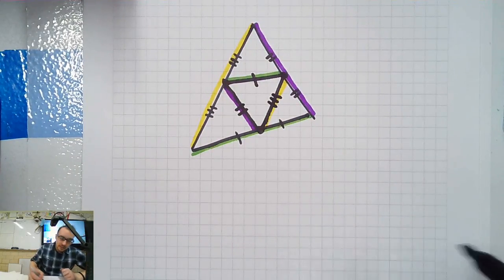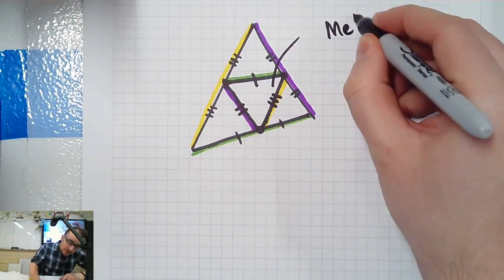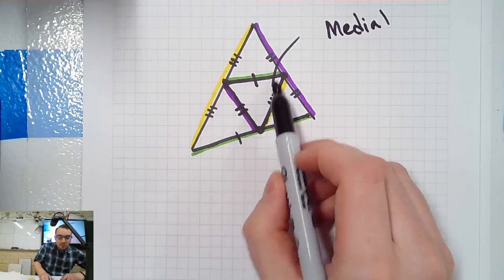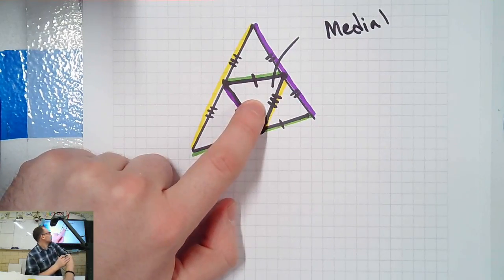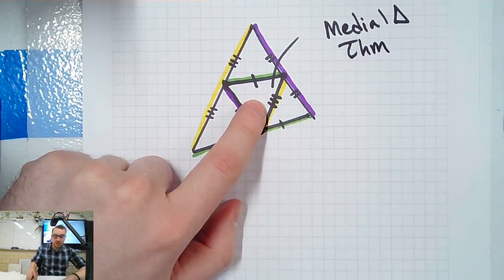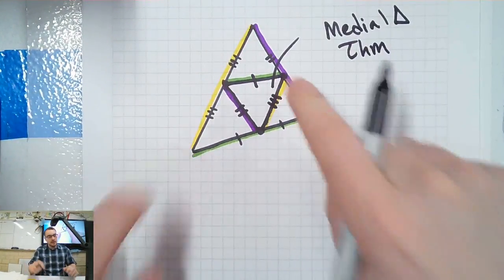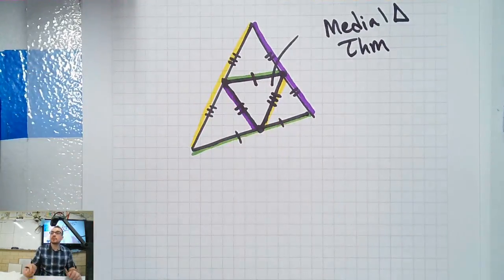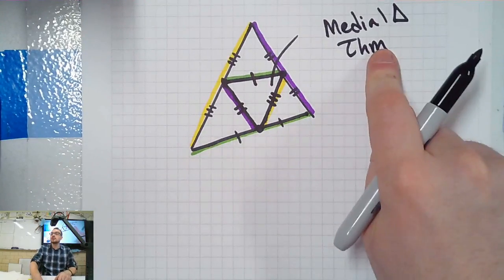So all of that was a theorem — we just never called it anything. It's called the Medial Triangle Theorem. The reason is that when you connect the midpoints of a triangle — making the midsegments — you create a triangle in the middle called the medial triangle. The Medial Triangle Theorem says that these sides will be parallel, and the opposite sides will be half and double. So it just gets you all this for free, instead of doing the whole proof.